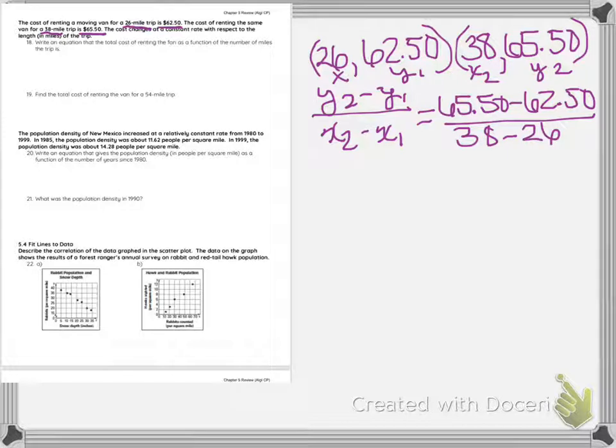So when I subtract these, I get 3 over 12, and that reduces to 1/4. So my slope is 1/4.